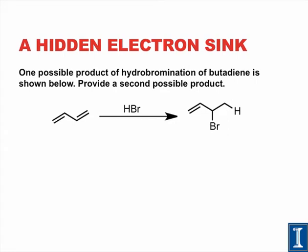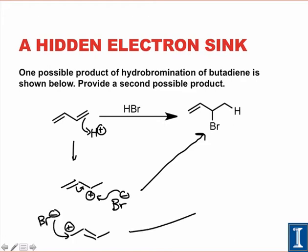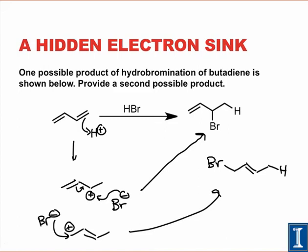Here's another example: in the treatment of butadiene with hydrobromic acid, one possible product is provided. This goes by a mechanism involving protonation of the double bond first — either double bond will work — and in either case we arrive at a cation. If the bromide anion directly attacks that cation, we end up with one product. But there's an alternative resonance structure for this cation, and if bromide attacks at that position, we end up with an entirely different product — one with bromine on the far end of the pi system and a double bond in the middle. We could only see this second product by recognizing the resonance in the cationic intermediate.